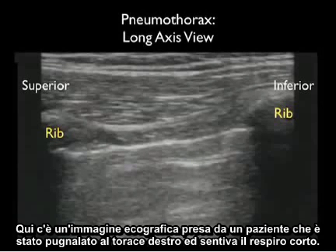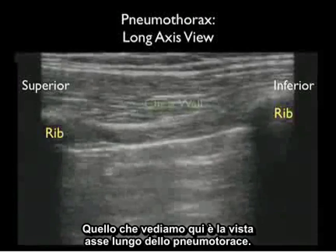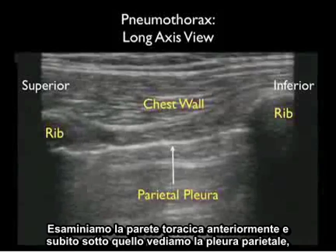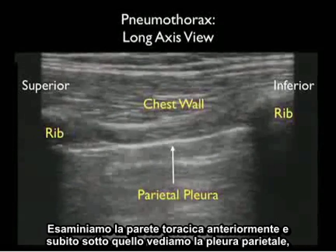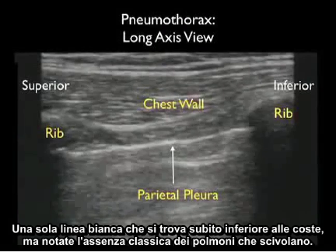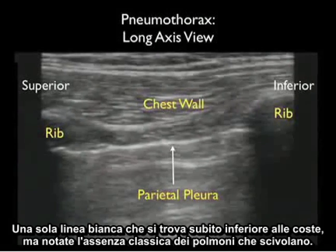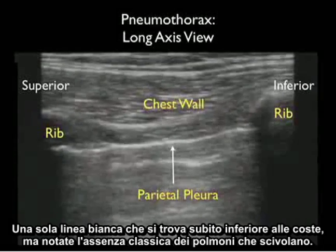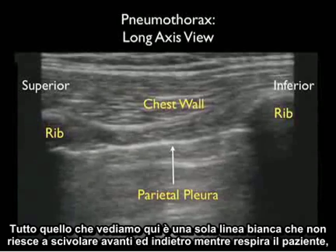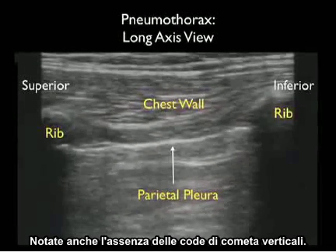Here's an ultrasound image taken from a patient who was stabbed to the left chest and had shortness of breath. We see a long axis view of a pneumothorax. Looking at the chest wall anteriorly, right below that we see the parietal pleura — the single white line located directly inferior to the ribs — but notice the classic lack of lung sliding. All we see here is a single white line that fails to slide back and forth as the patient breathes. Notice also the absence of the vertical comet tails.